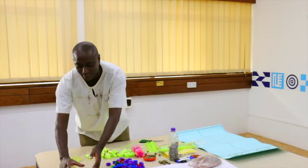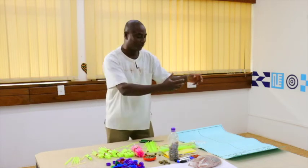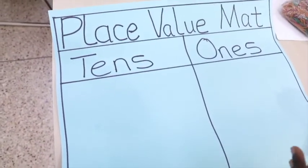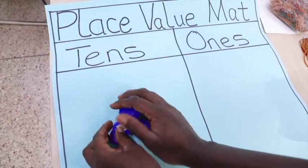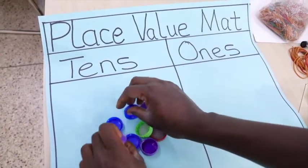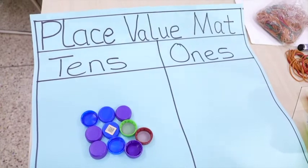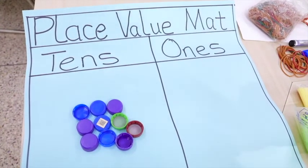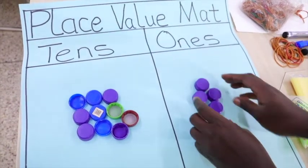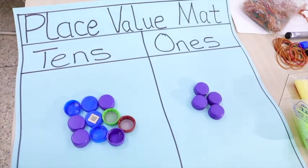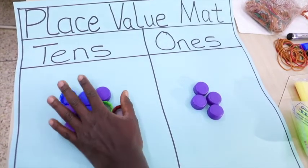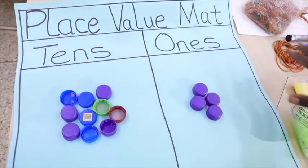Then as you model them, you go and place them on your place value mat to show the number that you are modeling. Because in modeling, we are relating number quantity to numerals. So if I say 10, when I come to model it on the place value mat, I should be able to see the quantity of 10s and then the quantity of 1s. This is a simple way of modeling number quantities using these materials. Thank you.